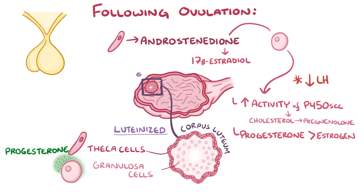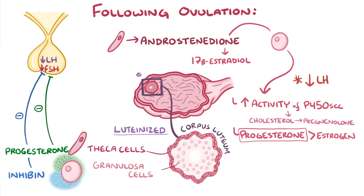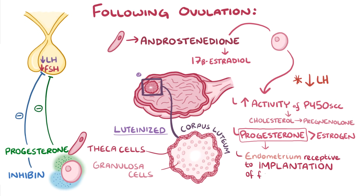Progesterone acts as a negative feedback signal on the pituitary, decreasing release of FSH and LH. At the same time, luteinized granulosa cells begin secreting inhibin, which similarly inhibits the pituitary from making FSH. Both processes result in a decline in estrogen levels, meaning progesterone becomes the dominant hormone during this phase. Together with decreased estrogen, rising progesterone signals that ovulation has occurred and helps make the endometrium receptive to the implantation of a fertilized gamete.